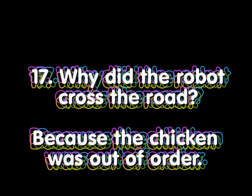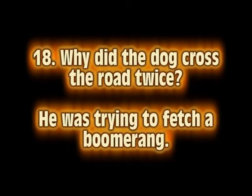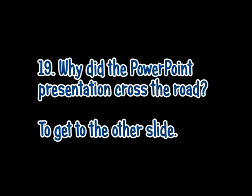Why did the robot cross the road? Because the chicken was out of order. Why did the dog cross the road twice? He was trying to fetch a boomerang.